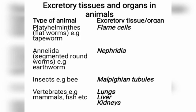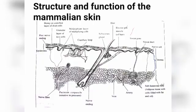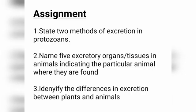We have come to the end of our lesson today. I'll give you an assignment to take it further. Number one: state two methods of excretion in protozoans. Number two: name five excretory organs or tissues in animals, indicating the particular animal where they are found. And number three: identify the differences in excretion between plants and animals.